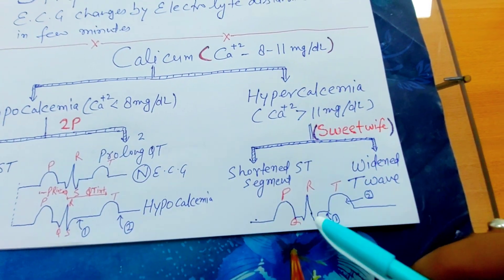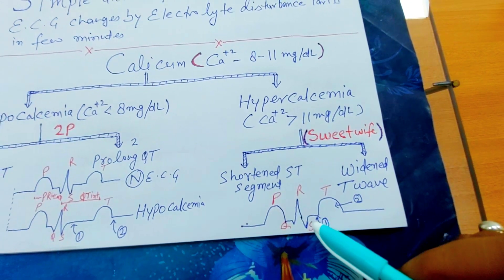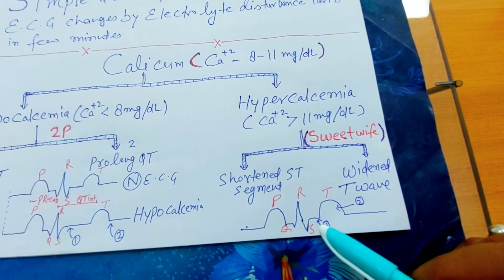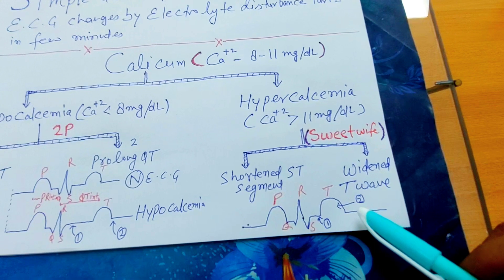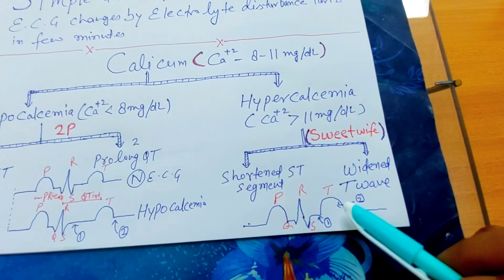See in this ECG, P, Q, R, S, T, this is shortened ST segment, and this is wide T wave.